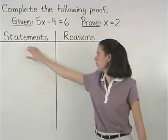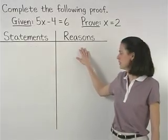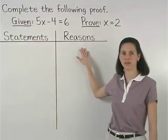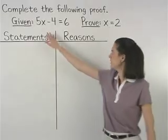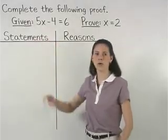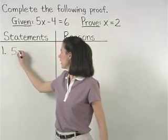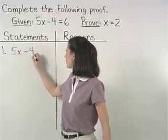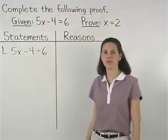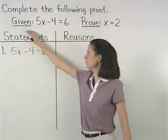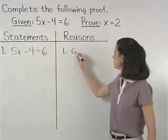On the left side of the chart, we have our statements, and on the right side, we have our reasons. The very first statement in our proof will be the given statement, so on the left, we can say that statement 1 is 5x minus 4 equals 6. And the reason for this statement is that it's given, so reason 1 is given.